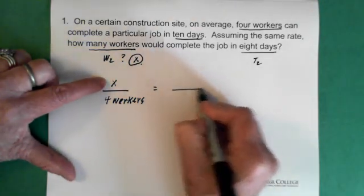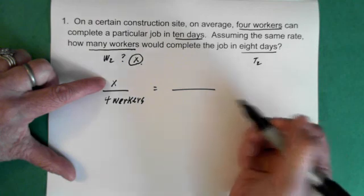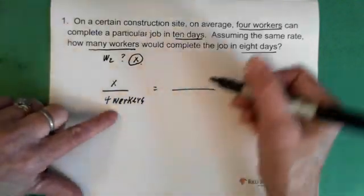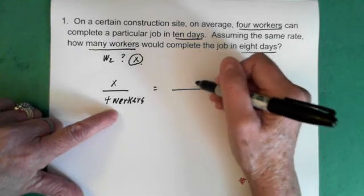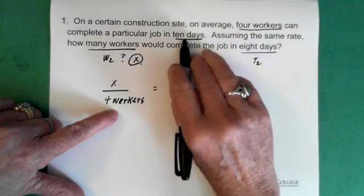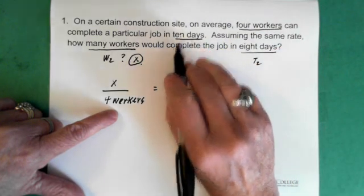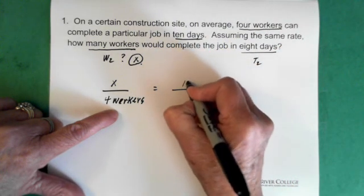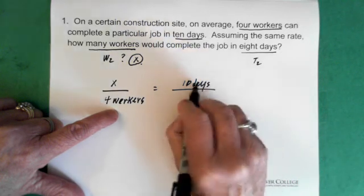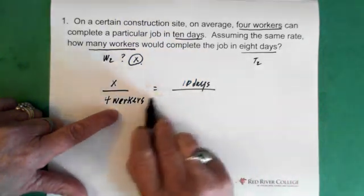Now, in the second ratio here, these 4 workers need to be connected to the days that are up here. Alright, so the 4 workers are connected to the 10 days. So then the 10 days must go in the numerator, alright? So these two are connected.